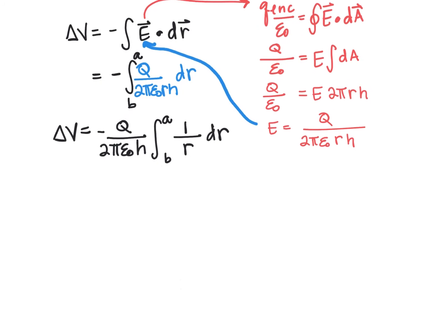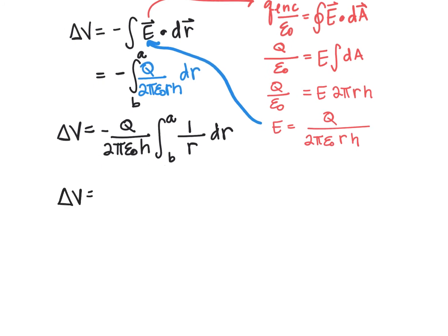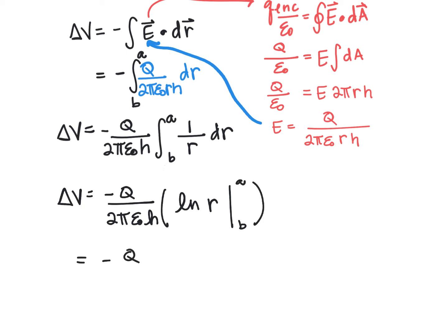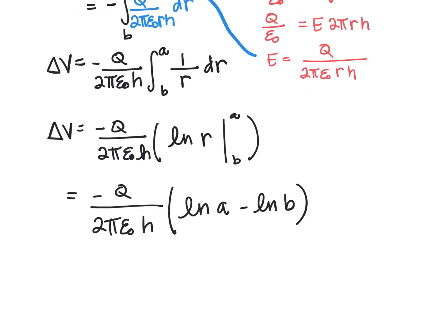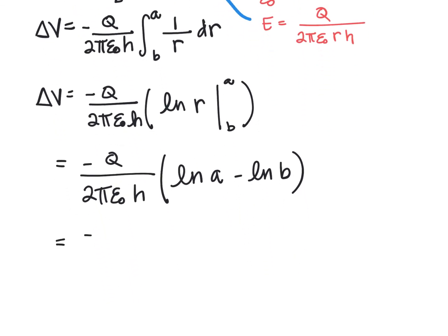Evaluating the integral, the potential difference equals negative q over 2π epsilon naught h times ln(r) evaluated from b to a. This gives us negative q over 2π epsilon naught h times ln(a) minus ln(b), which simplifies to negative q over 2π epsilon naught h times ln(a/b).